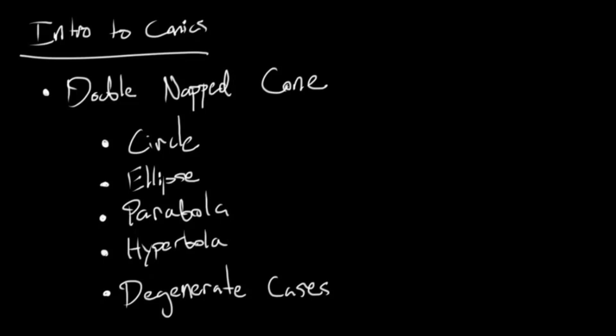We have the circle, the ellipse, the parabola, and the hyperbola. There are some other ones called the degenerate cases, but those are just subsections of the above four. This is going to be a quick overview video, and then in subsequent videos we will dig into each of these.